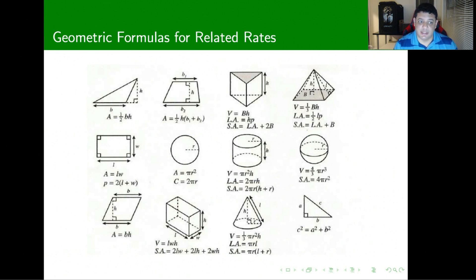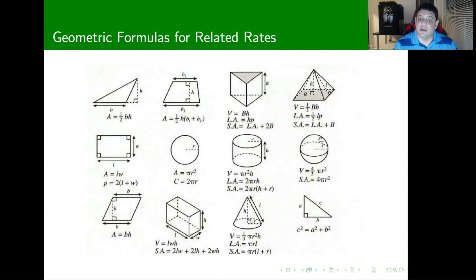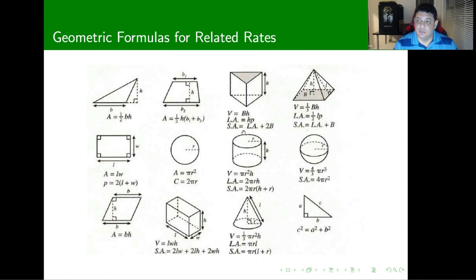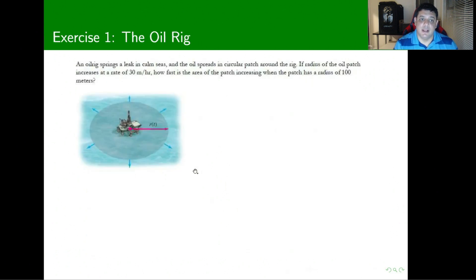Many geometric formulas are used across different related rates problems. We should remember things like the area of triangles (one-half base times height), the area and perimeter of parallelograms, the area and circumference of a circle, and the volume of a cylinder, sphere, cone, or pipette. From these we can derive volume, surface area, and lateral area — all useful for setting up related rates relationships.